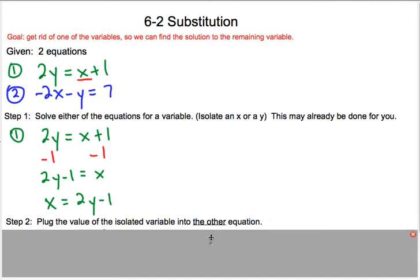That's where we're at. Step 2: plug the value of the isolated variable into the other equation. It has to be the other equation. So here's the value of the variable: 2y - 1 is the value of x, and we're going to plug that into equation 2.